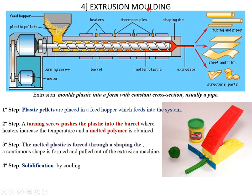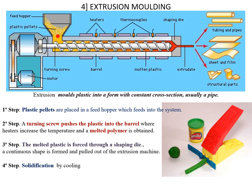The last method is extrusion molding. It is similar to injection molding — the only difference is that the plastic part coming out is extruded, and that is how you get typical shapes like pipes, sheets, or films. You take plastic pellets, mix all the ingredients, and fill them into the hopper.